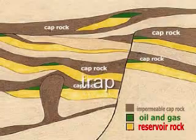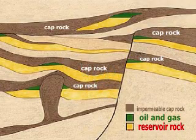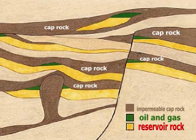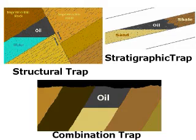We call this impermeable rock a trap. A trap must be made of impermeable rock; it must be above and all around the oil, and it must keep the oil from migrating. There are three types of traps we are going to discuss: structural, stratigraphic, and a combination of structural and stratigraphic.